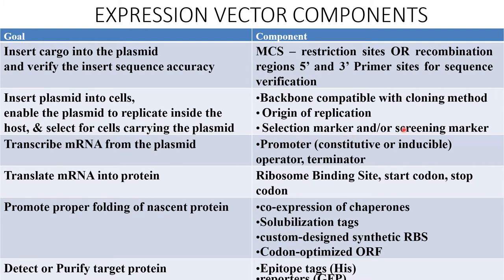To transcribe mRNA from the plasmid, a promoter — either constitutive or inducible — is utilized along with the operator and terminator. To translate mRNA into protein, a ribosome binding site, a start codon, and a stop codon are utilized.